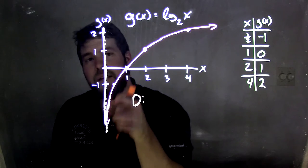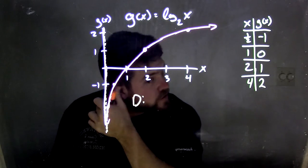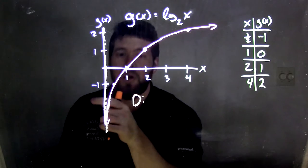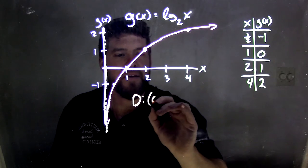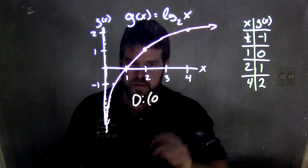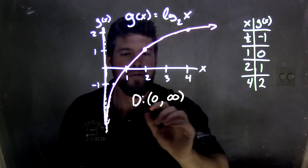Well, we notice that this function keeps going down, down, down, down, down. It doesn't equal zero, but it gets very, very close. It gets every value just to the right of that. So our domain is zero, but not including zero, and it goes all the way to positive infinity.